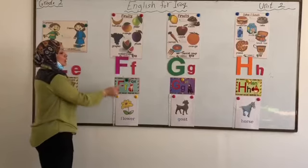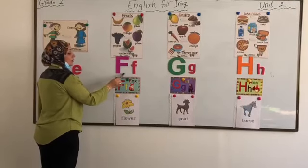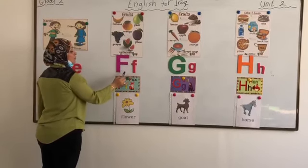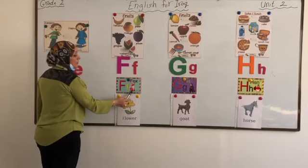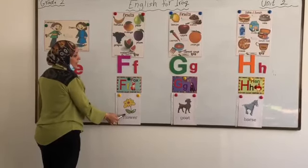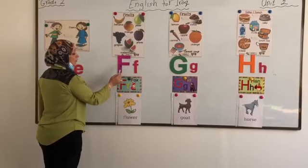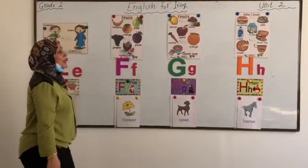Now, look at this letter. What is this letter? It's F. F capital, f small. F-F Fox. F-F Flower. Again, repeat it again. F-F Fox. F-F Flower. Well done everyone.